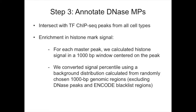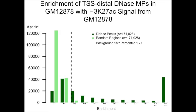Our next step is to annotate these peaks using other data sets. One option is intersecting these master peaks with transcription factor ChIP-seq peaks from all different cell types. The other step is looking for enrichment in histone mark signal — specifically, whether a peak is enriched in a particular signal compared to random regions in the genome. For example, in GM12878 cells, distal DNase master peaks are highly enriched in H3K27 acetylation signal compared to background random regions, and by creating this background distribution we can set a cutoff to select peaks enriched in that signal.